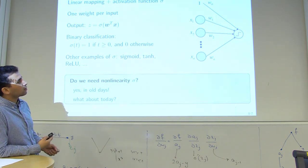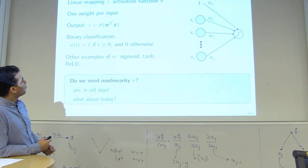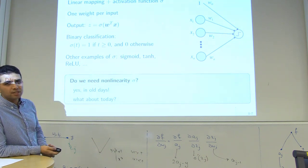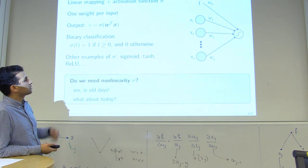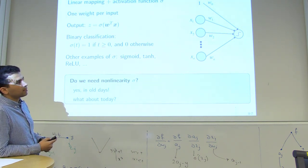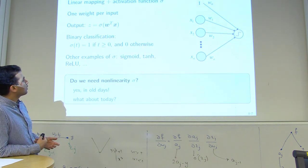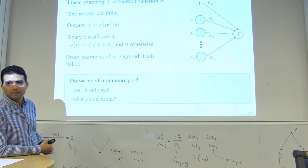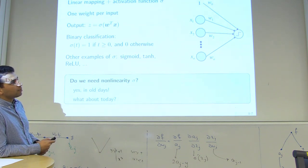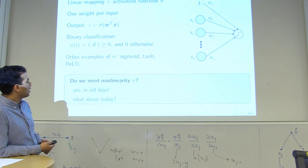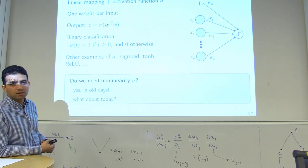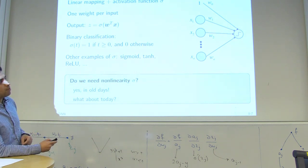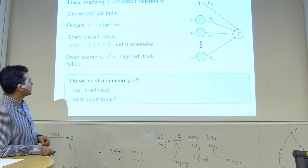In binary classification, the traditional activation is thresholding: output 1 if input is positive, 0 if negative. You can make it smoother using sigmoid functions, tanh, or ReLU. The key role of the nonlinearity is that without it, you only have a linear mapping — just a first-order Taylor approximation — and can't represent nonlinear input-output relationships.